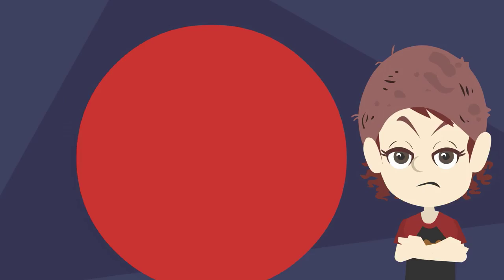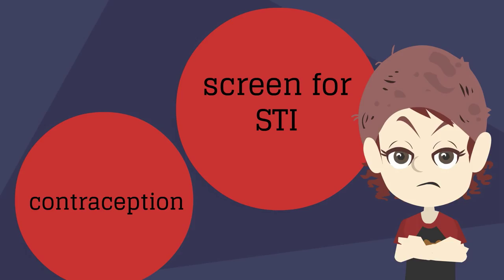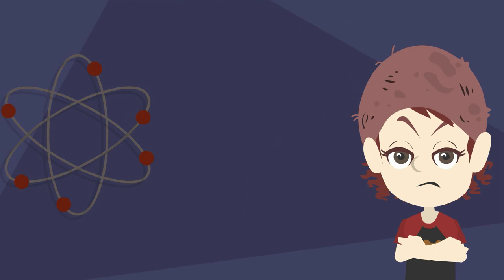It is important to discuss contraception and to screen for sexually transmitted infections. Women under age 25 should have gonorrhea and chlamydia testing at least once a year. The human papillomavirus, or HPV, is commonly contracted by women shortly after initiation of sexual intercourse. In most women, the infection is transient and does not progress to cervical cancer. We do not screen for HPV in women under the age of 30 in order to decrease unnecessary interventions.